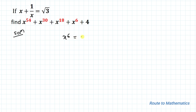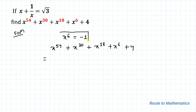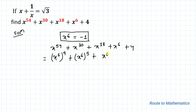So we get x to the power 6 equals minus 1. We are asked to find the value of x to the power 54 plus x to the power 30 plus x to the power 18 plus x to the power 6 plus 4. As we can see, all the powers are multiples of 6. We factorize: x to the power 6 whole to the power 9, plus x to the power 6 whole to the power 5, plus x to the power 6 whole to the power 3, plus x to the power 6, plus 4.